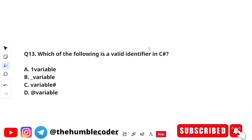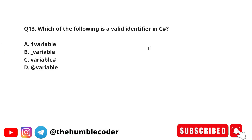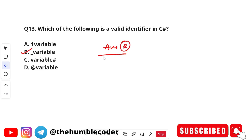Which of the following is a valid identifier in C sharp? The options are: A) 1variable, B) _variable, C) variable# , and D) @variable. The correct answer is option B — underscore variable. In C sharp, identifiers can start with an underscore or a letter, but not with a number or special character.